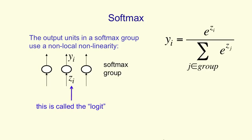What's more, the yi's have to lie between 0 and 1. So we've forced the yi's to represent a probability distribution over mutually exclusive alternatives just by using that softmax equation.